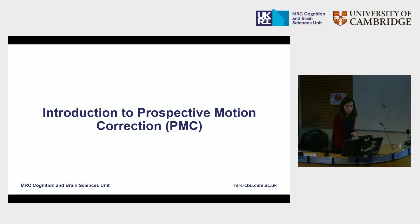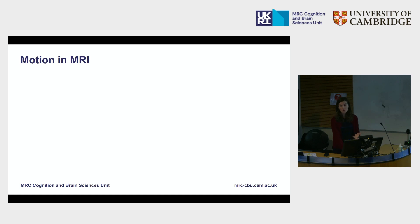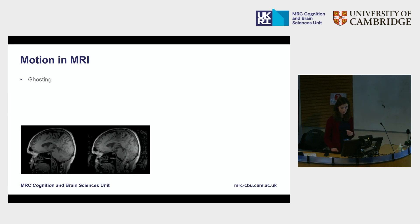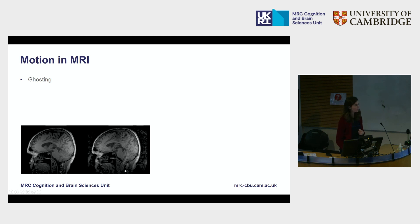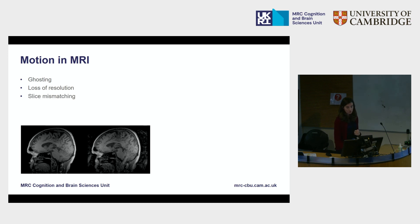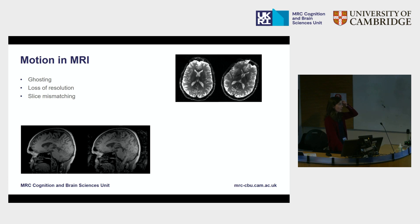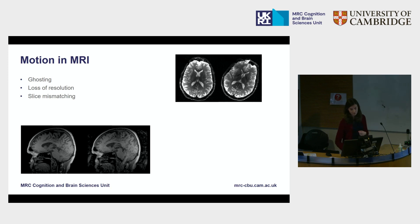So, prospective motion correction or PMC. Most of you in the room, if you do work with MRI, will be aware that there are lots of consequences of head movement. We might see some ghosting — there are examples here, such as a double of the image appearing at the back of the brain, and striping across the brain. Another very common impact is the loss of resolution, so images come out blurry or smoothed out. We can also have slice mismatching, which is particularly problematic for fMRI or diffusion MRI, where slices may be completely mismatched, meaning voxels no longer line up and some form of correction is needed.